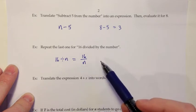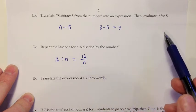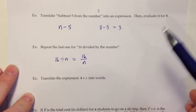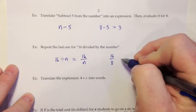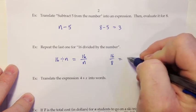Either of those answers would be acceptable. It says to repeat the last one, so I'm going to assume they meant to repeat the evaluate as well. That would be 16 divided by 8, and then that gives us 2.